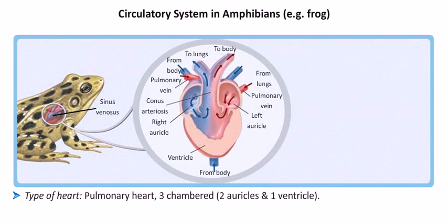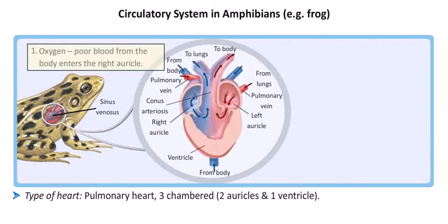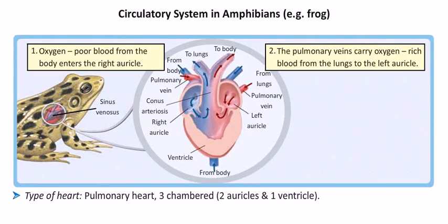Circulation of blood: The deoxygenated blood from the body parts is collected by three large veins called vena cava. These veins unite to form a structure called sinus venosus, which opens into the right auricle. The pulmonary veins carry oxygen-rich blood from the lungs to the left auricle.